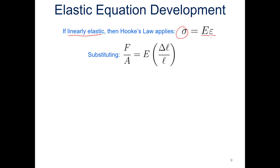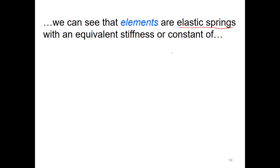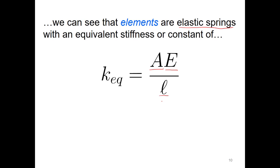If we assume linear elastic behavior, Hooke's law applies: stress equals modulus times strain. Substituting force per unit area for stress and change in length over original length for strain, then solving for force gives us F = k × x — where k is our equivalent spring constant and x is the change in length. So the equivalent stiffness is k_eq = (A × E) / L — area times modulus divided by element length. This is really important as we develop these shape functions.